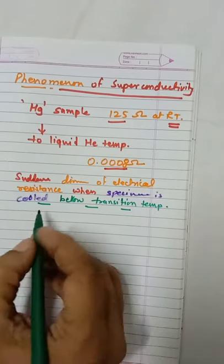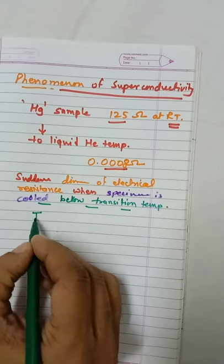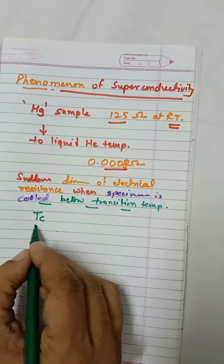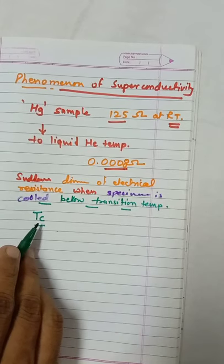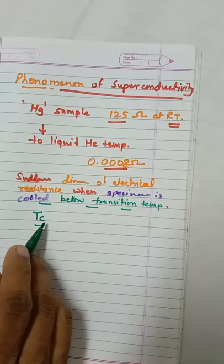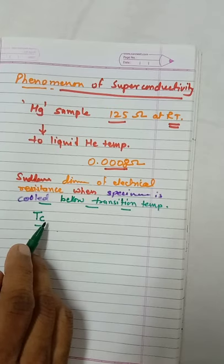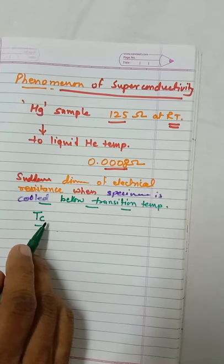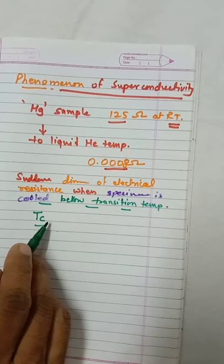Meaning that there exists some temperature below which the specimen is in the superconducting state, and if the temperature is increased again, specimen returns to normal conducting state.